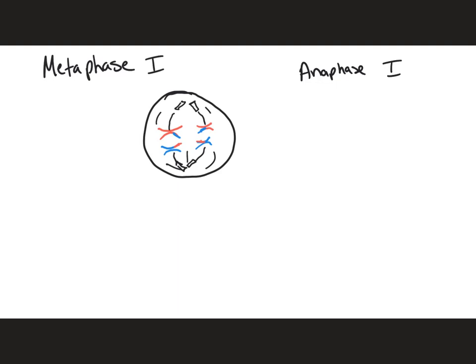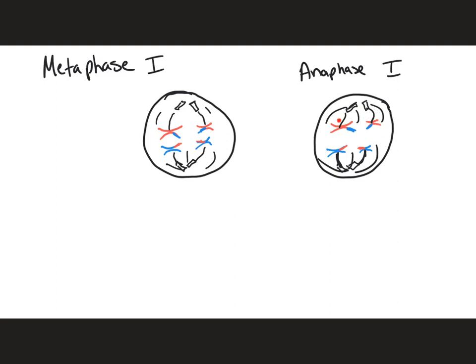In anaphase one, the pairs of homologous chromosomes are going to separate. The sister chromatids, however, are going to remain attached to one another. So in anaphase one, the homologous chromosomes actually separate from one another, while we leave the sister chromatids together for now. Each chromosome moving to a pole still contains its sister chromatid.